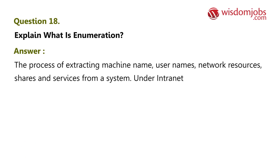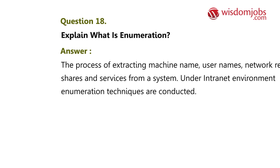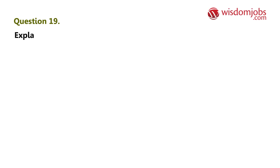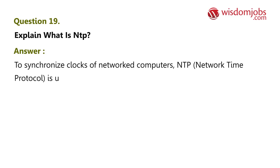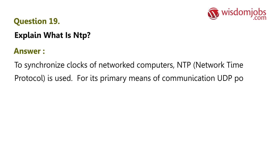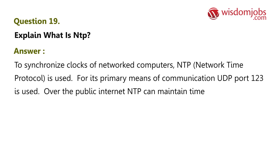Question 18: Explain what is enumeration. Answer: Enumeration is the process of extracting machine names, usernames, network resources, shares, and services from a system in an intranet environment. Question 19: Explain what is NTP. Answer: NTP (Network Time Protocol) is used to synchronize the clocks of networked computers. Its primary means of communication is UDP port 123. Over the public internet, NTP can maintain time to within 10 milliseconds.